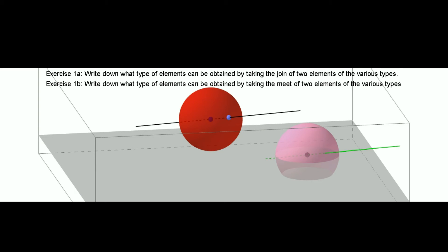For example, if you have two elements which are lines, then their meet could either be a point or it could be nothing depending on whether the two lines are in the same plane or not. You could also think about what the meet of a point and a line might look like or what the join of a point and a line might look like. And so, I'd like you to write down all the different possibilities and describe what the joins or meets could be.